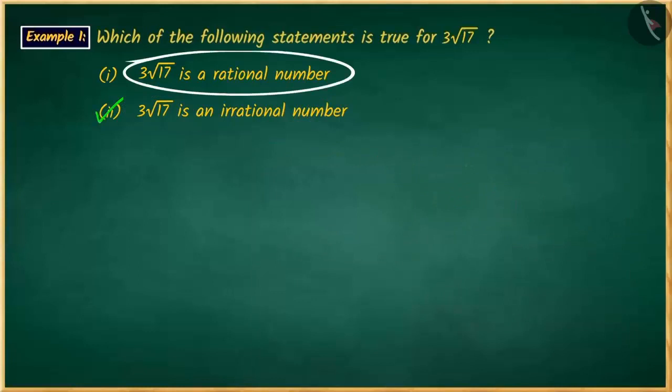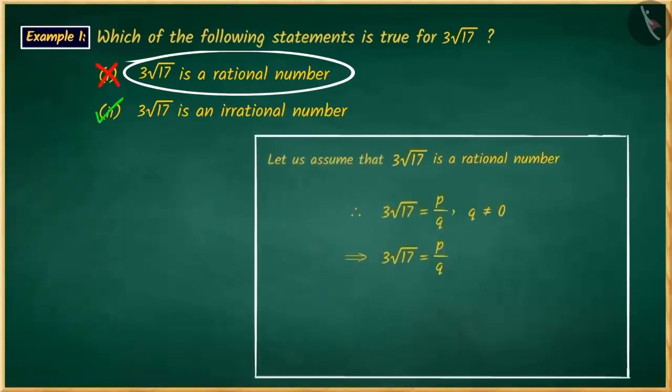If you have chosen the first option, it is a good try. But, this answer is wrong. Because, if you rearrange it, you will get square root of 17 equal to p upon 3q.